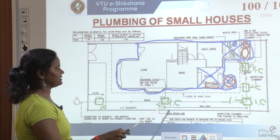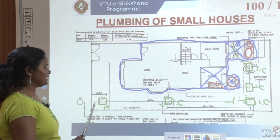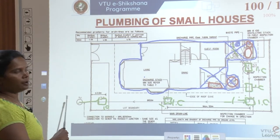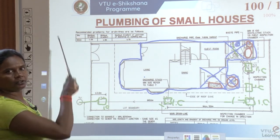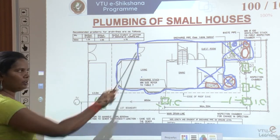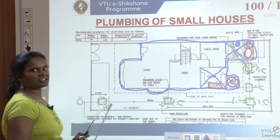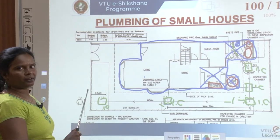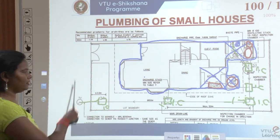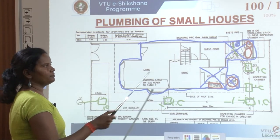From the inspection chambers, all the building waste is taken to the intercepting chamber. From that intercepting chamber, where we have an intercepting trap, it goes to the manhole which is located on the road. This is how waste is taken out from the building.